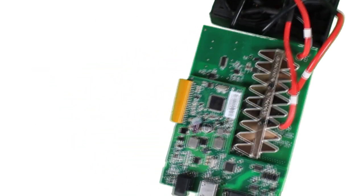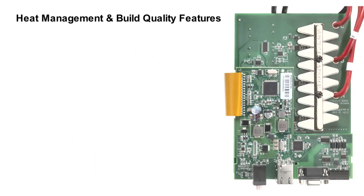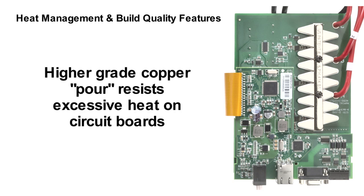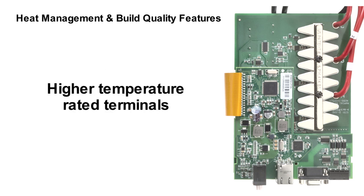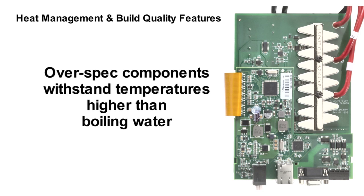Let's take a look further in, where advanced heat management is top priority and where we put in a lot of innovations. One of them is using a higher grade of copper pour in our printed circuit boards. Another is higher temperature rated terminals, and selecting capacitors and other components rated to withstand temperatures higher than boiling water. These over-spec components cost more, but we're engineering for extreme reliability instead of a bottom line.